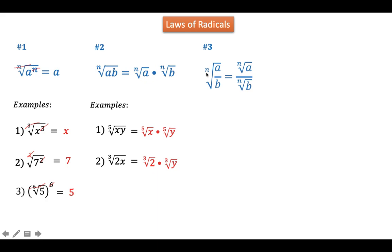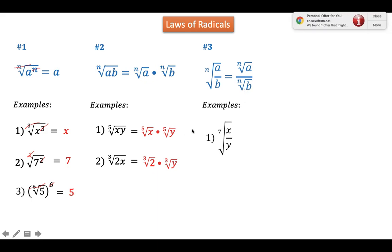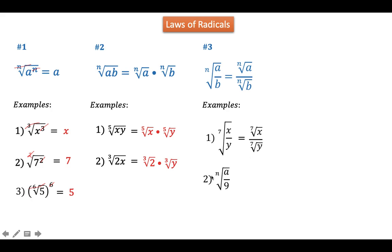For the Law of Radicals #3, the nth root of a over b is similar to Law #2 — we distribute the index to the radicand a over b, giving us the nth root of a over the nth root of b. For example, the 7th root of x over y can be written as the 7th root of x over the 7th root of y. Given the nth root of a over 9, this can be written as the nth root of a over the nth root of 9.